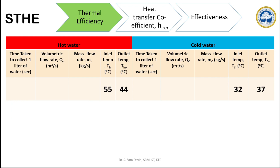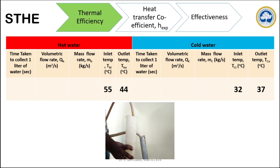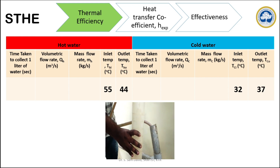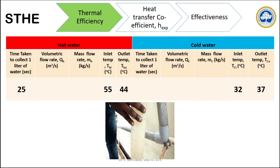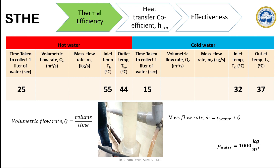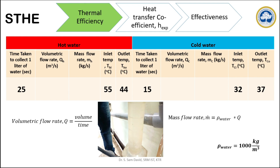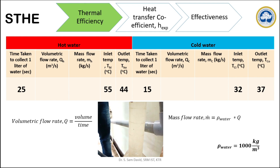To find the flow rate of the hot water and cold water, a measuring cylinder is taken. The time taken for collecting 1 litre of hot water and cold water is noted. From this time reading, we can calculate the volumetric flow rate, where volumetric flow rate is equal to volume divided by time. In this case, the volume is 1 litre and the time is 25 seconds for hot water, and correspondingly we can do it for cold water.